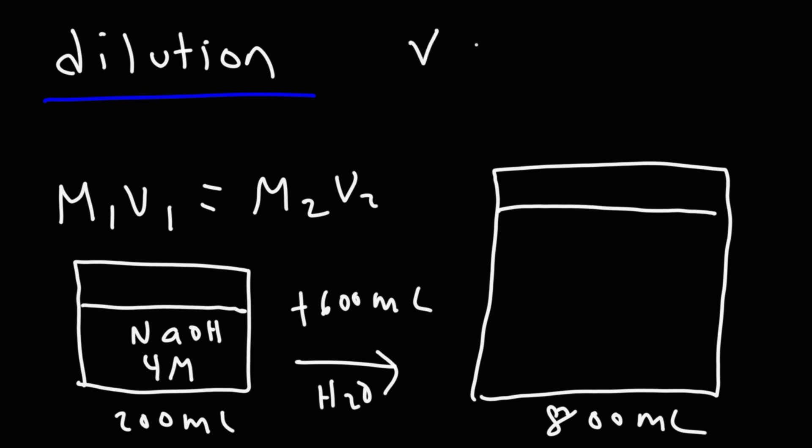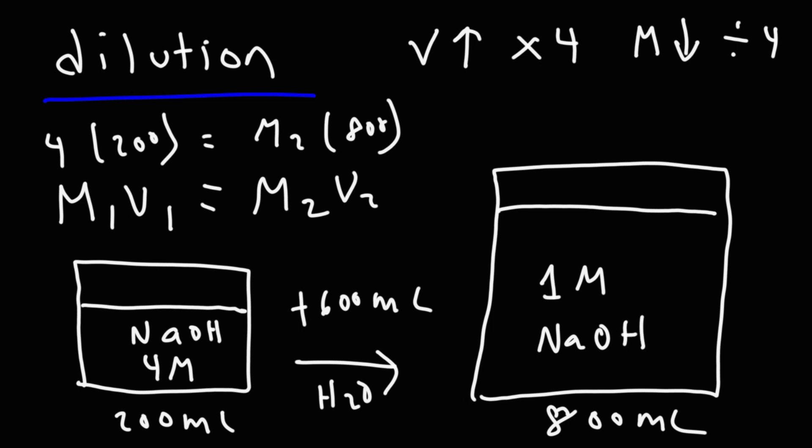So notice that the volume of the solution went up by a factor of four. This formula will help you to calculate the new molarity. m1 would be four, v1 will be 200, m2 we're trying to find, v2 is 800. But you could think of it conceptually. If you dilute it by a factor of four, if you increase the volume by a factor of four, the concentration will decrease by a factor of four. So if we divide this by four, it should be 1 molar.